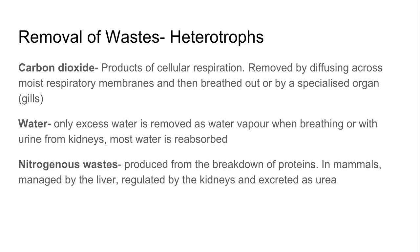In heterotrophs, carbon dioxide is one of the waste products produced by cellular respiration, and it's removed by diffusing across respiratory membranes and breathed out, or by a specialized organ such as gills in fish. Only excess water is removed — we can breathe it out as water vapor or remove it in the form of urine from our kidneys, while most water is reabsorbed to maintain our hydration.